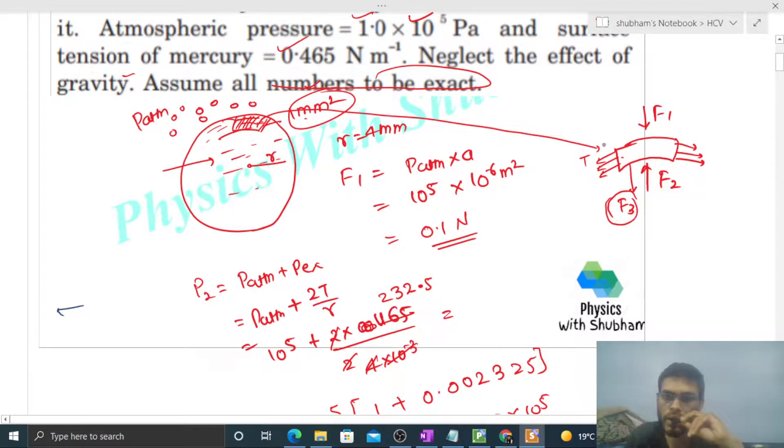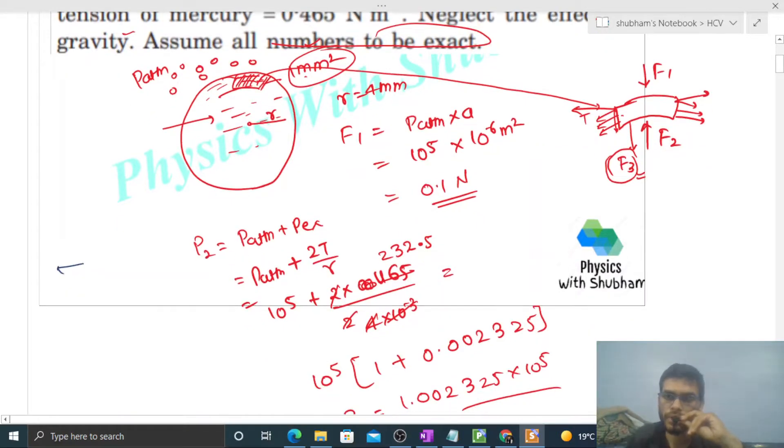And if you see the net force because of this surface tension, which is in the downward direction, we have to find out this value. Because in the horizontal direction the components will cancel and the net component will be vertically downward. So now we can equate net force on this surface to be zero.